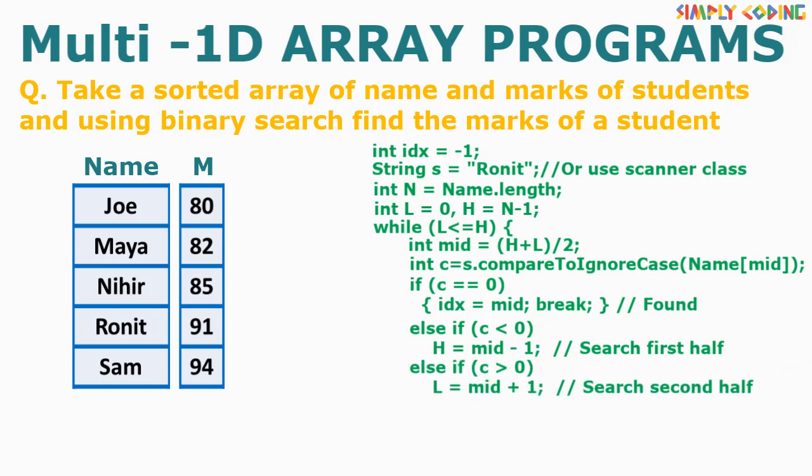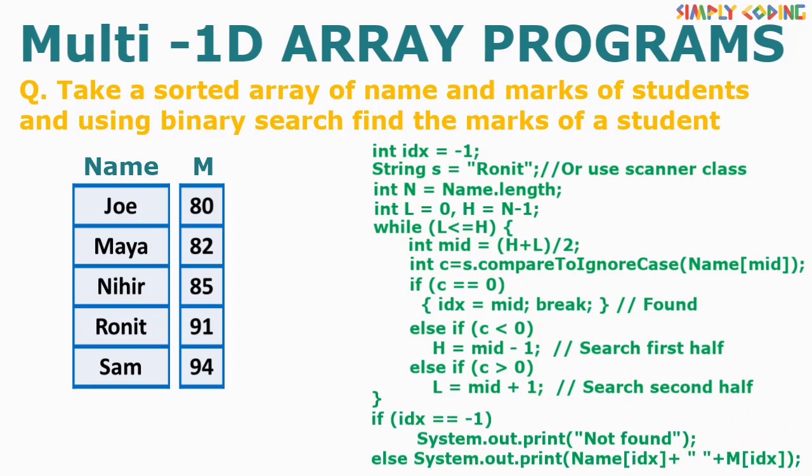If the value returned is positive, we ignore the left side of mid and set low to mid plus one. We continue this loop until the name is found or high becomes less than low, meaning the entire array is searched. Once outside the loop, if the index is still minus one we print element not found; otherwise we use the index to print the name and marks.